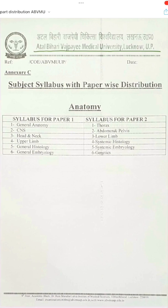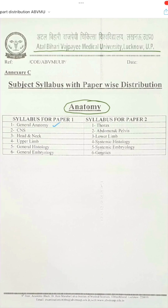Right now you can see that this is the syllabus of anatomy and how it has been distributed in paper 1 and paper 2. In paper 1 you will have general anatomy, then CNS or the neuroanatomy portion, head and neck, upper limb, general histology, and general embryology.